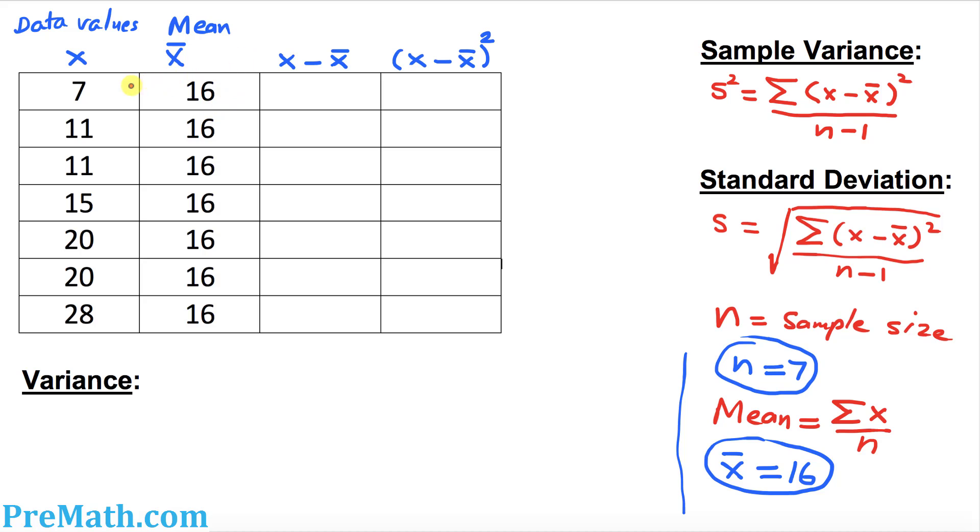In this step, we will fill out all our data values, which we call x values, in this table. The very first column on the left-hand side, I put down all data values from 7 all the way to 28.